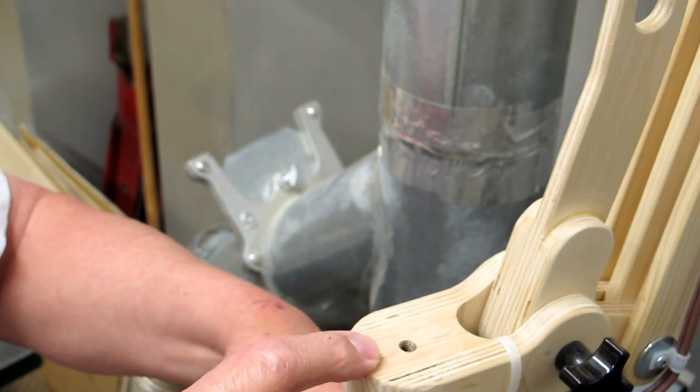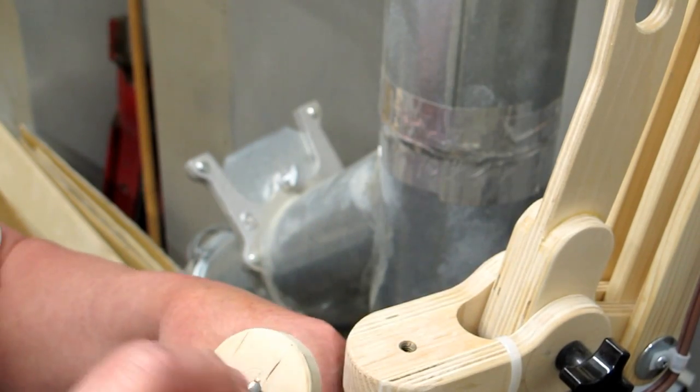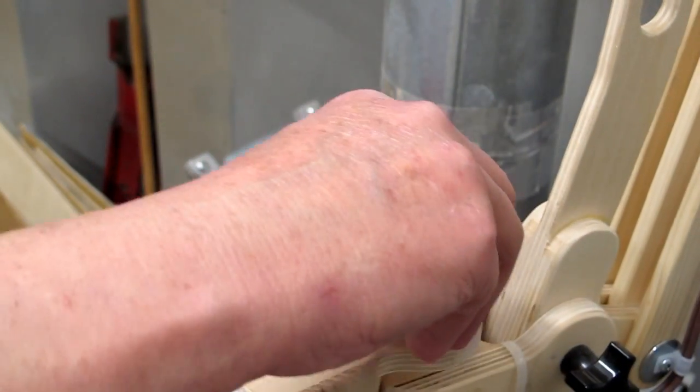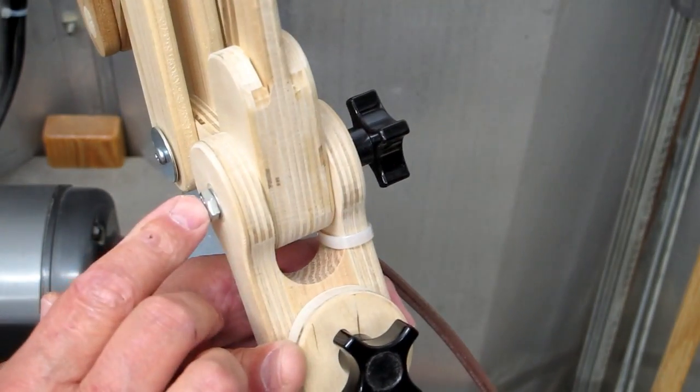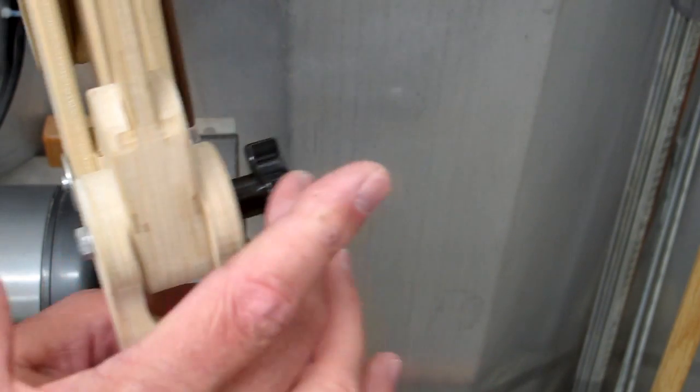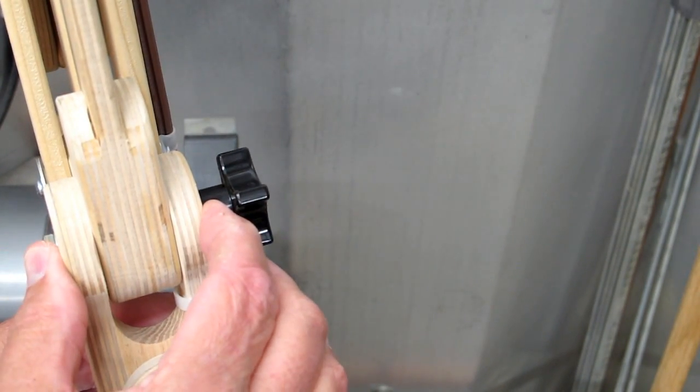Just a metal threaded insert that's in here. You can make these star knobs yourself. This star knob is operating on a bolt, it just squeezes this tight.